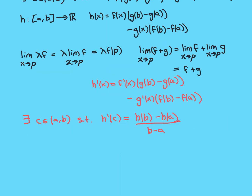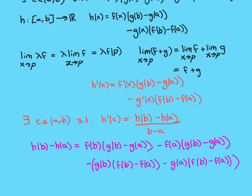Now all we need to do is apply the mean value theorem to our function h. Applying the mean value theorem says there will exist a c in the open interval (a, b) such that the derivative of h at c equals the difference quotient for h from a to b — so h(b) minus h(a) over b minus a. Now we just plug in what h' and h are in terms of f and g.